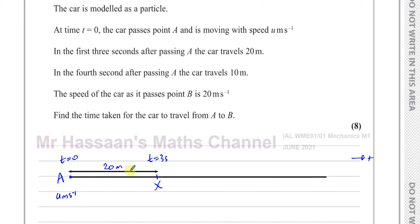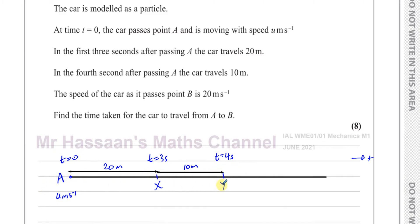Then in the fourth second after passing A — one more second — the car travels another 10 meters. So it reaches a point Y, and altogether between A and Y it has traveled 30 meters. That's 20 plus 10, which is 30 meters total after four seconds.